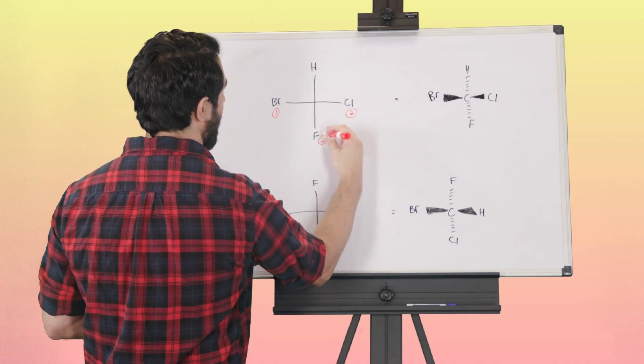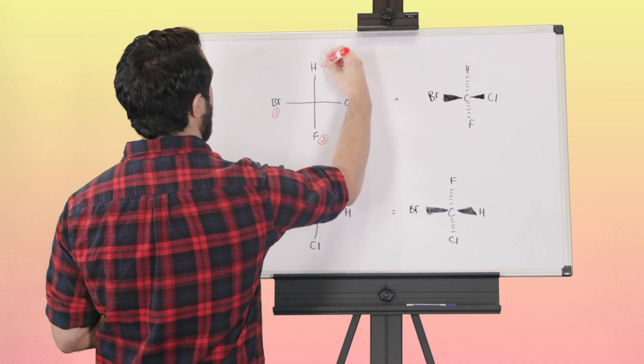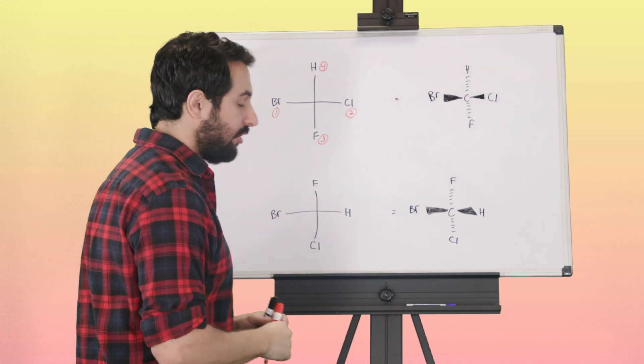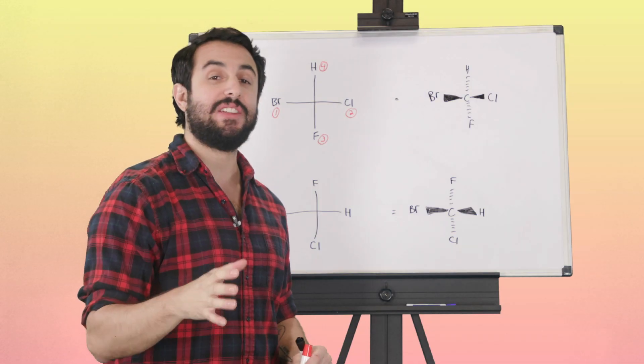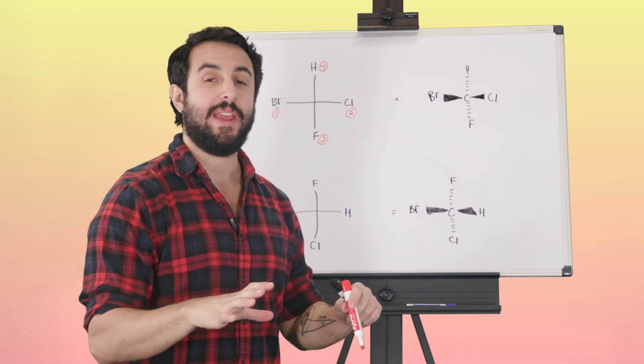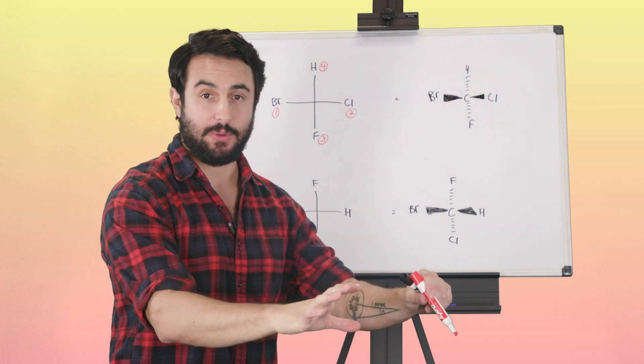The key thing here is that we need to have the lowest priority group facing away from us. Hydrogen has to be away from us. With Fisher projections, if the lowest priority substituent is on a vertical bond, that is implied to be a dash bond, so it is away from you.